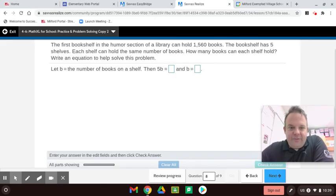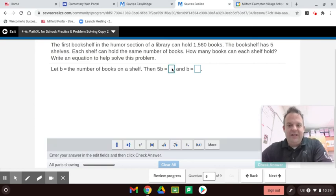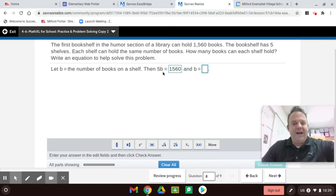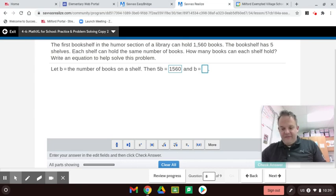The first bookshelf in the humor section of the library can hold 1,560 books. The bookshelf has five shelves. Each shelf can hold the same number of books. How many books can each shelf hold? Write an equation to help solve this problem. So 5B equals 1,560. And now the inverse of multiplying by 5 is dividing by 5. So we're going to do 1,560 divided by 5 to solve it. And we get 312.